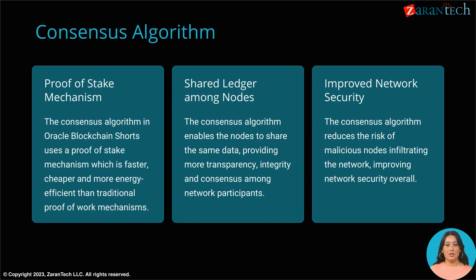Oracle Blockchain Shorts utilizes a highly efficient proof-of-stake consensus algorithm. This allows transactions to be validated faster, cheaper, and in a more energy-efficient manner compared to traditional proof-of-work models like in Bitcoin. The consensus mechanism also enables shared data integrity across the network.